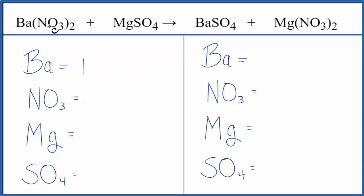Barium, we have one. NO3, that's the nitrate group. It's a polyatomic ion that's going to stay together. We have nitrate group here and over here, so let's just count this as one item. We have one nitrate times two, that gives us two of those.